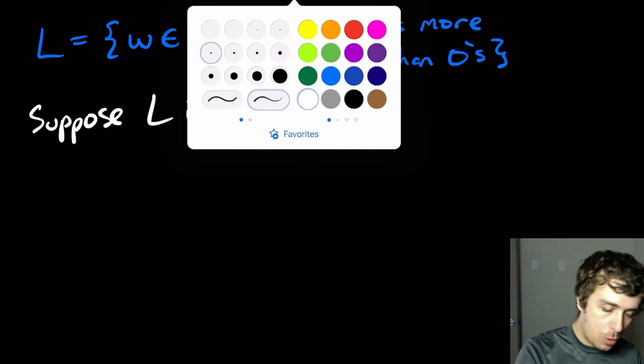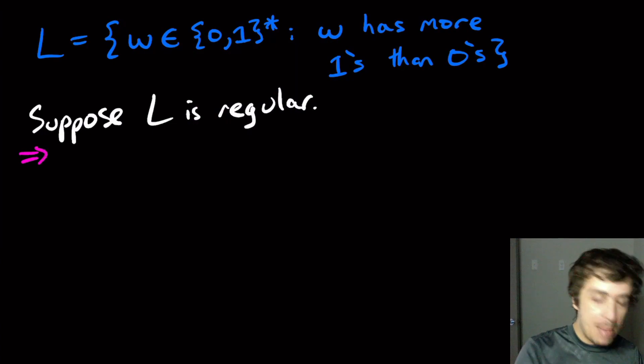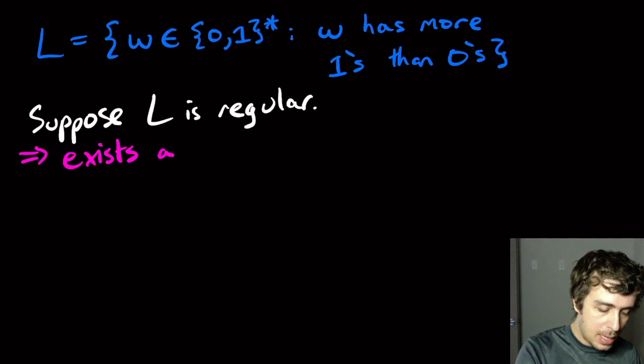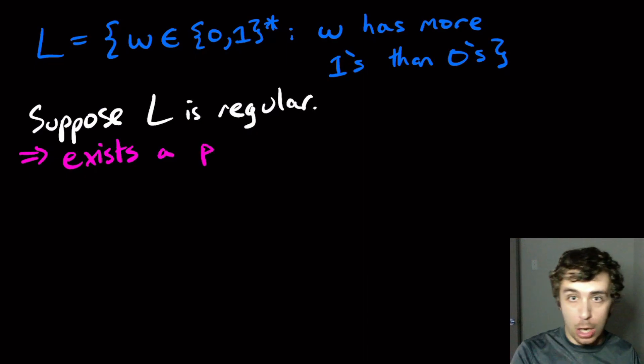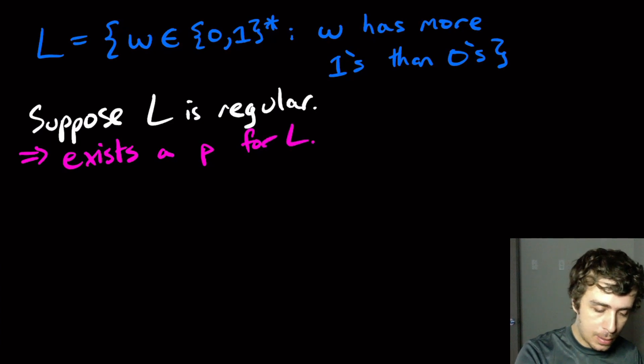Then, of course, there exists a pumping constant P for L. So there exists a, I'm just going to shorthand it to call it the variable P for L, just for simplicity.